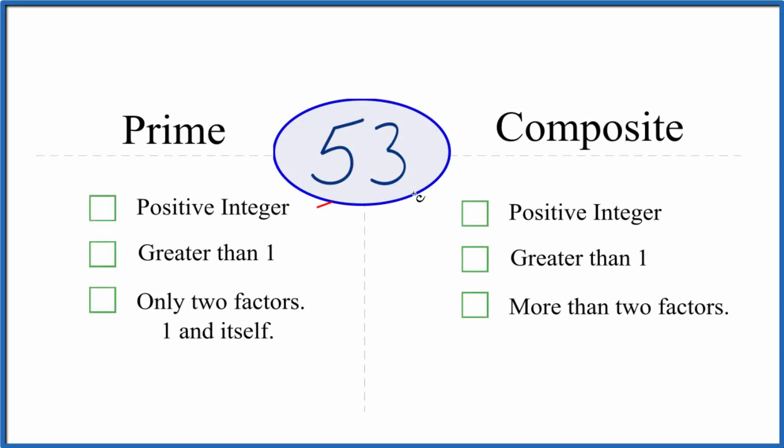Let's take a look and see whether 53 is a prime number or a composite number. So let's first look and see if 53 is prime. Is it a positive integer? Yeah, it's a positive integer, it's a whole number here.